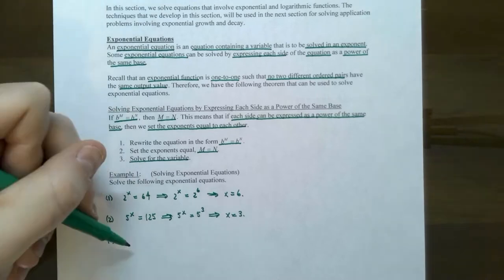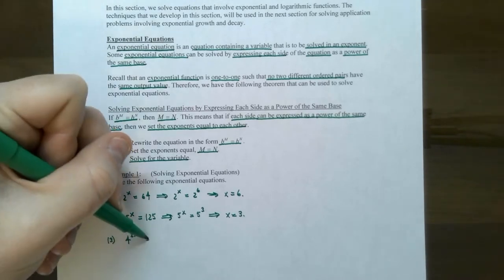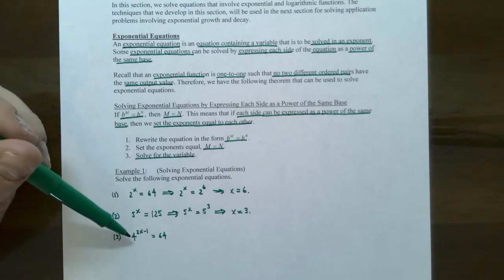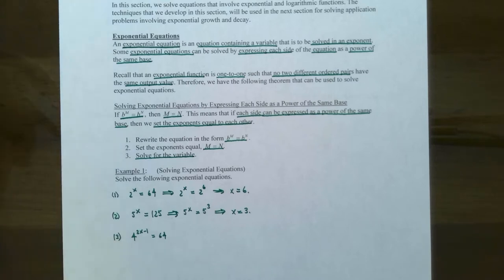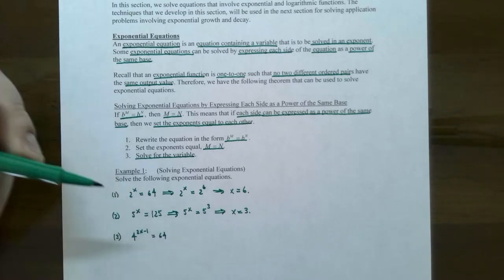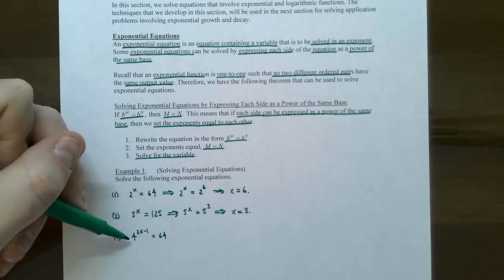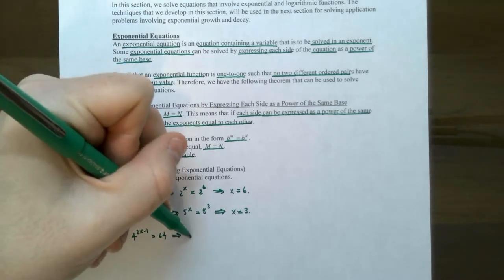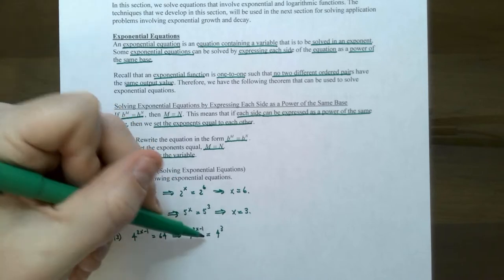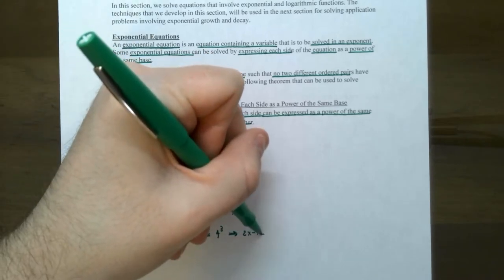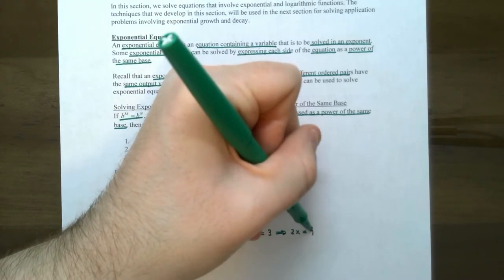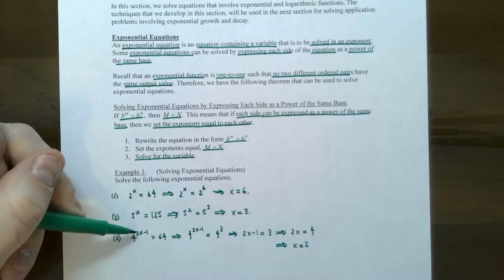Number three: four to the two x minus one equals 64. Even though the exponent is now an expression rather than just x, the variable is still located in that expression. The left side has base four, and 64 can be rewritten as four to the third power. So four to the two x minus one equals four to the third power, meaning two x minus one must equal three. Adding one to both sides gives two x equals four, so x equals two.